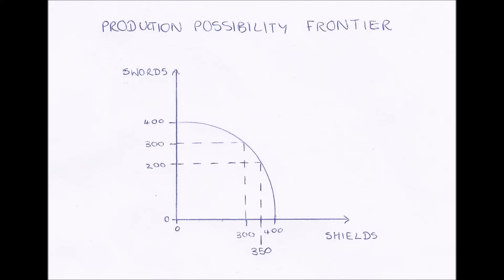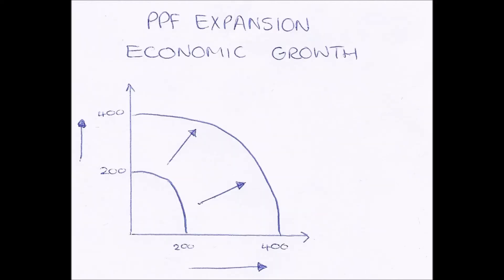Now our PPF can expand outwards, and this expansion outwards shows economic growth. We can see this because we are now able to produce more. If I was working on the small PPF, at full efficiency I can produce a maximum of 200 of either good. But as my PPF expands outwards and economic growth occurs, I can now produce a maximum of 400 of either good. Therefore I have increased my output and economic growth has occurred.